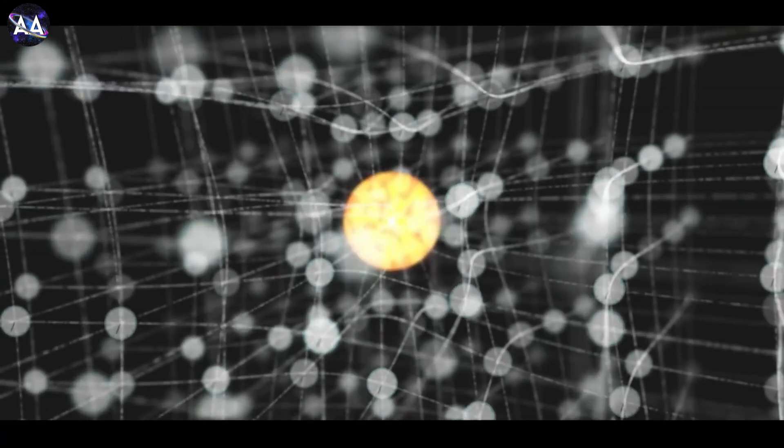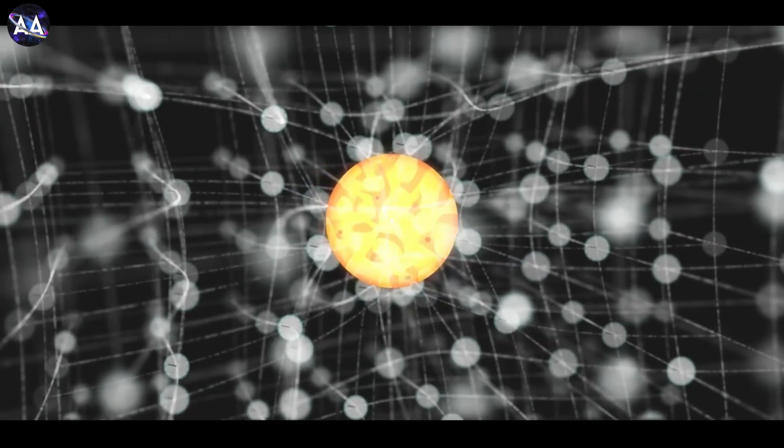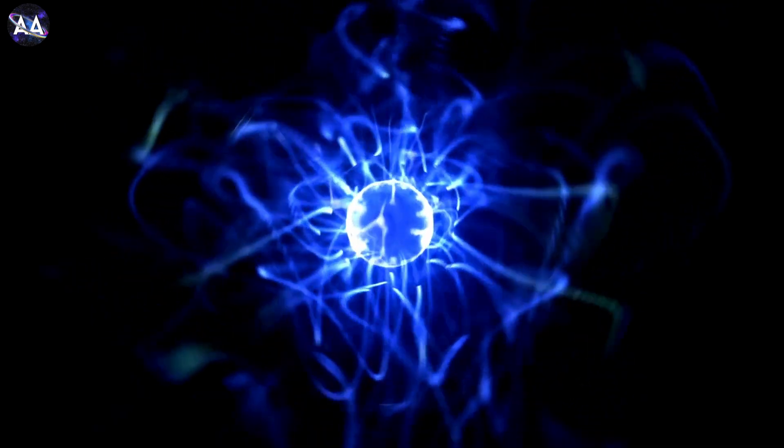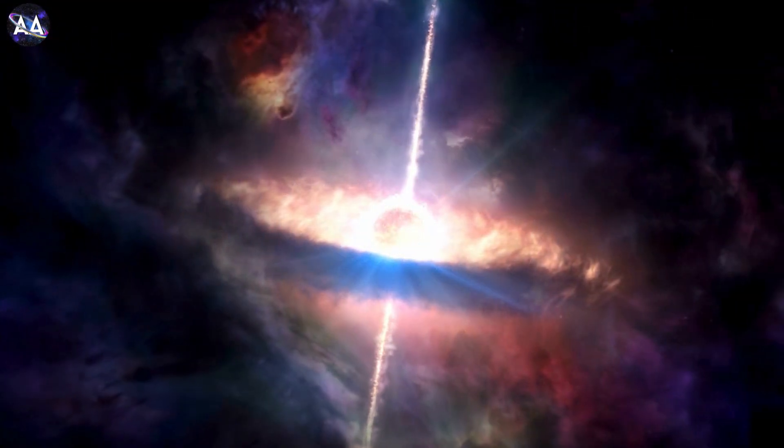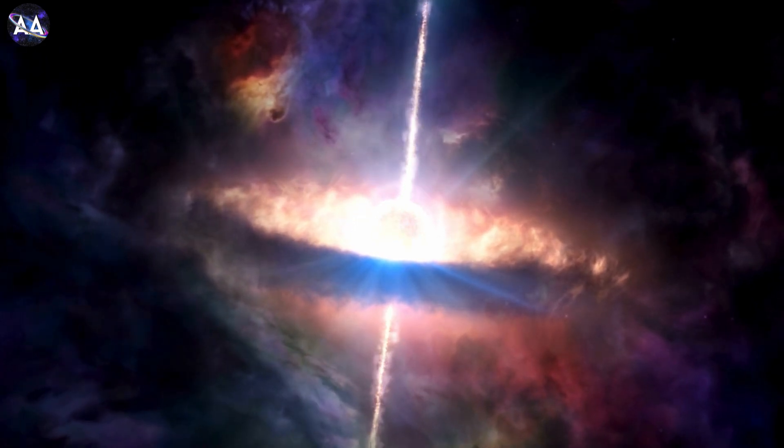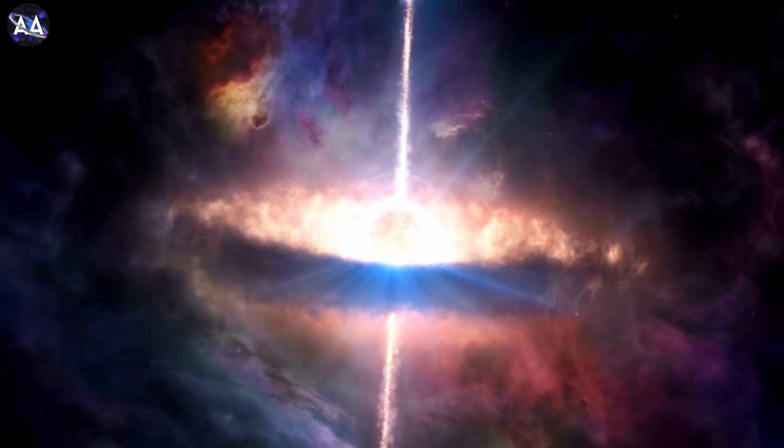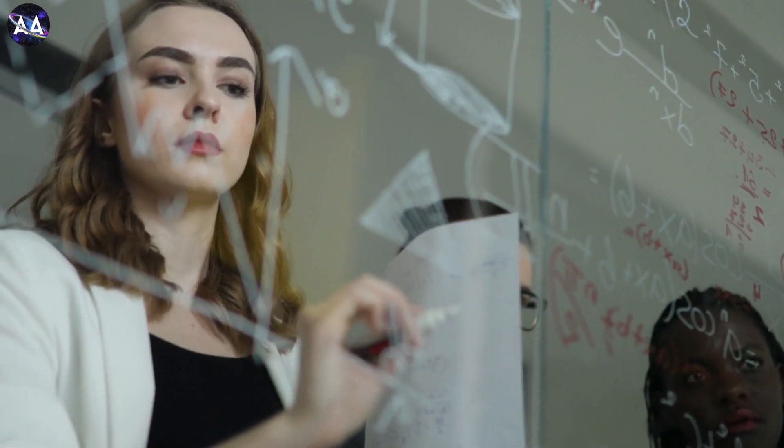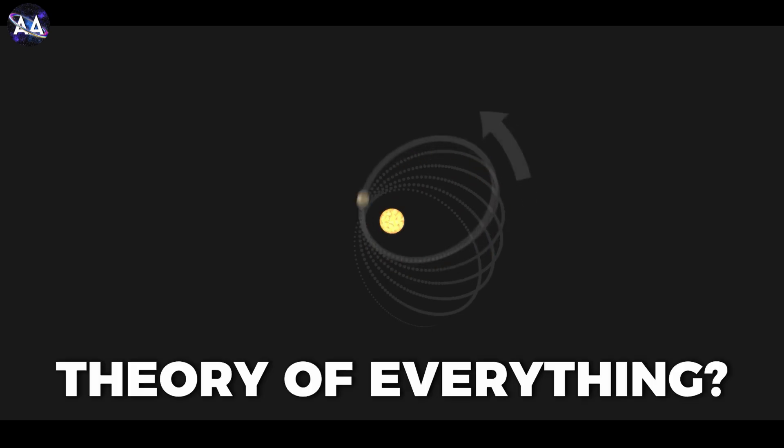Here's the problem. Relativity works brilliantly to explain massive objects like stars and black holes, while quantum mechanics governs the behavior of particles. But these two pillars of physics don't agree. Imagine trying to use them together to understand the core of a black hole or the first moments of the Big Bang. The math just falls apart. This conflict has haunted physicists for decades. Is there a deeper theory that unites them? A theory of everything?